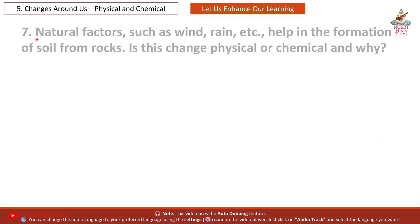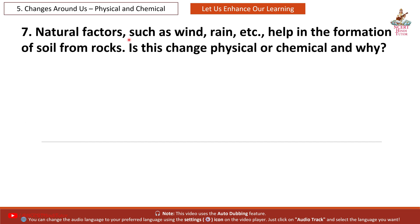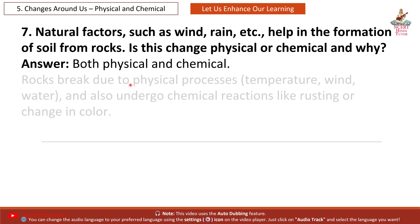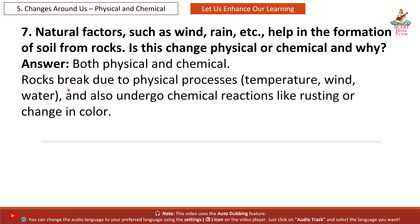Question 7: Natural factors such as wind, rain, etc. help in the formation of soil from rocks. Is this change physical or chemical and why? Answer: Both physical and chemical. Rocks break due to physical processes — temperature, wind, water — and also undergo chemical reactions like rusting or change in color.